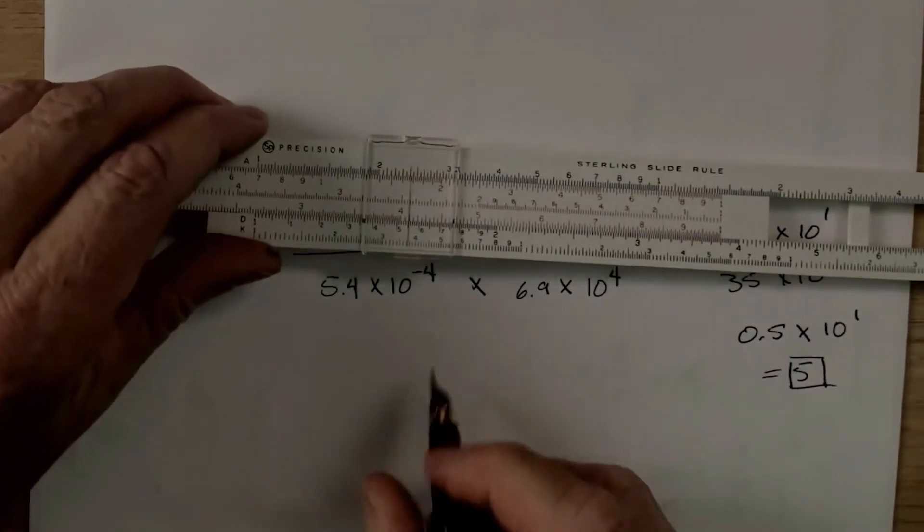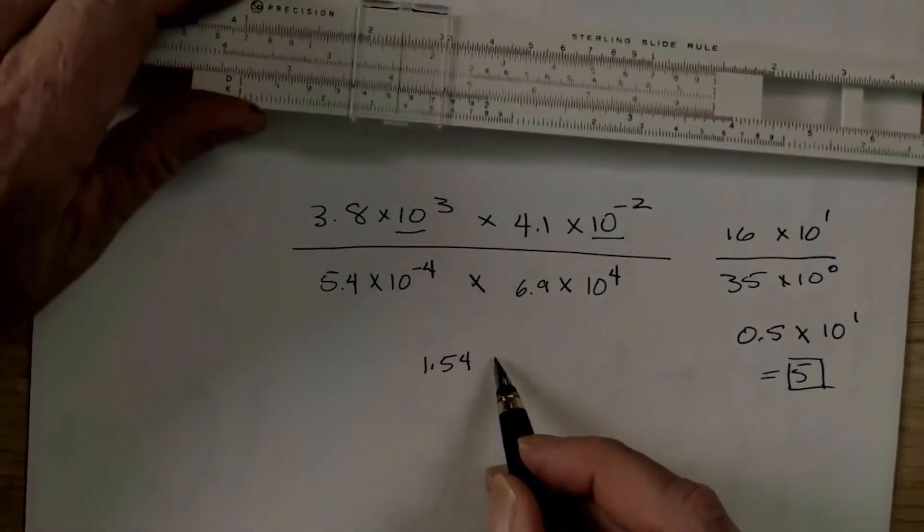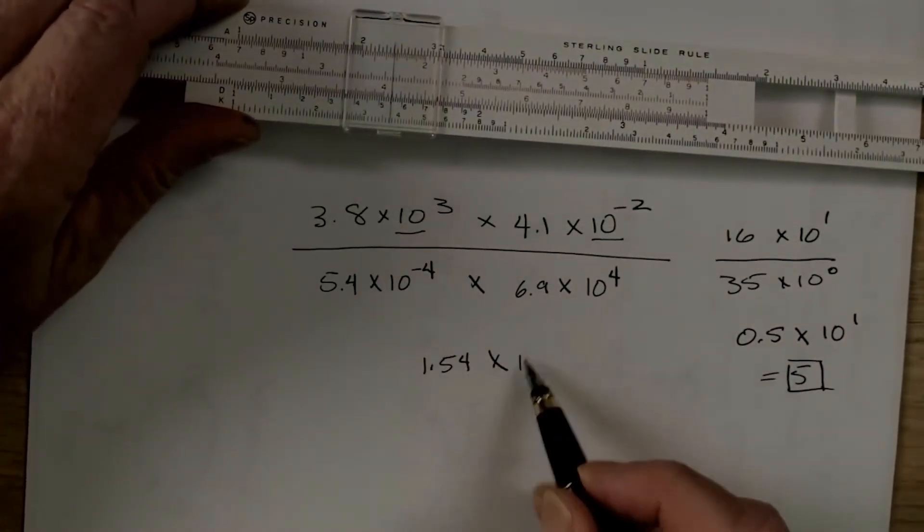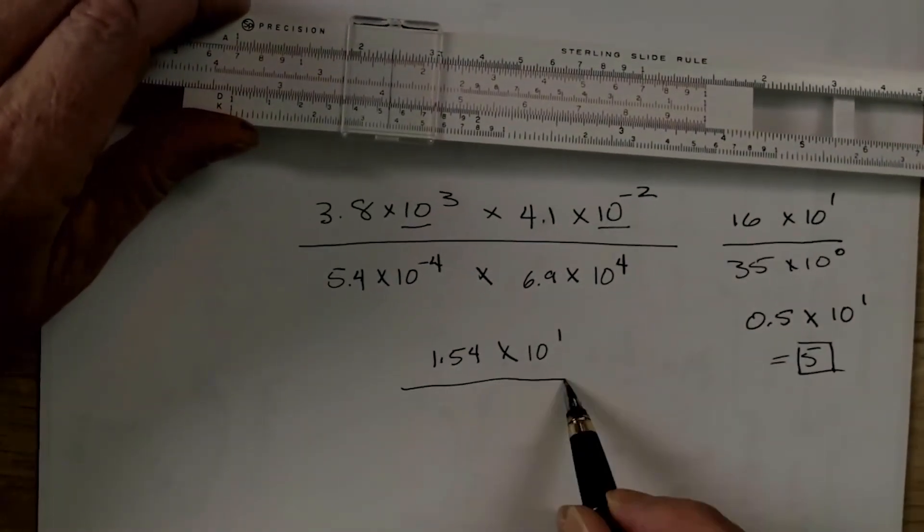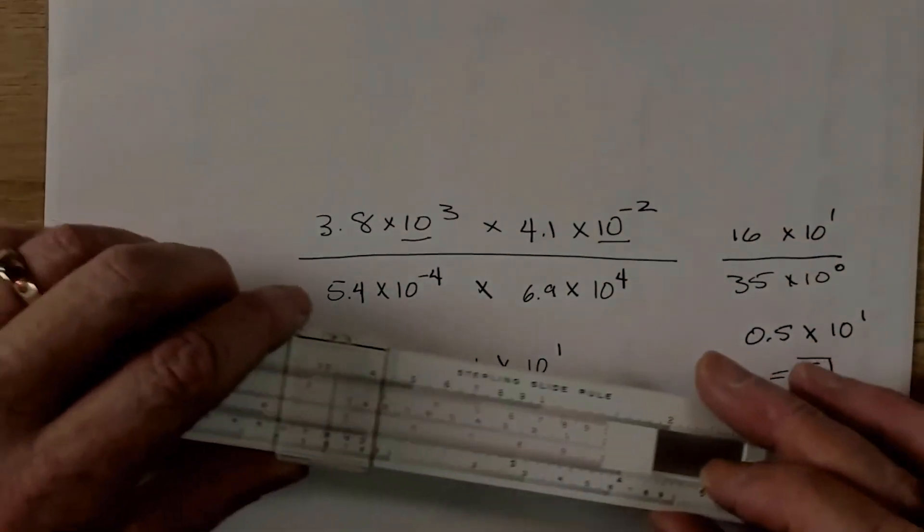And what we're going to end up with there is 1.54. So, we're going to have 1.54 times what? 10 to the 1 over. And then we're going to multiply these together.